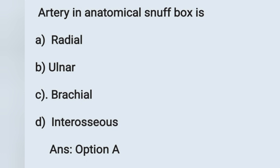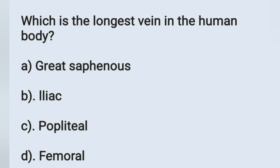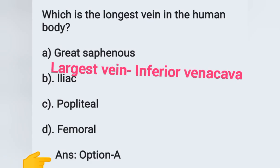Next question: which is the longest vein in the human body? Options: (a) greater saphenous vein, (b) iliac vein, (c) popliteal vein, (d) femoral vein. The longest vein in the human body is the greater saphenous vein — option A. Note: the largest vein in the human body is the inferior vena cava. Both are important previous year exam questions.